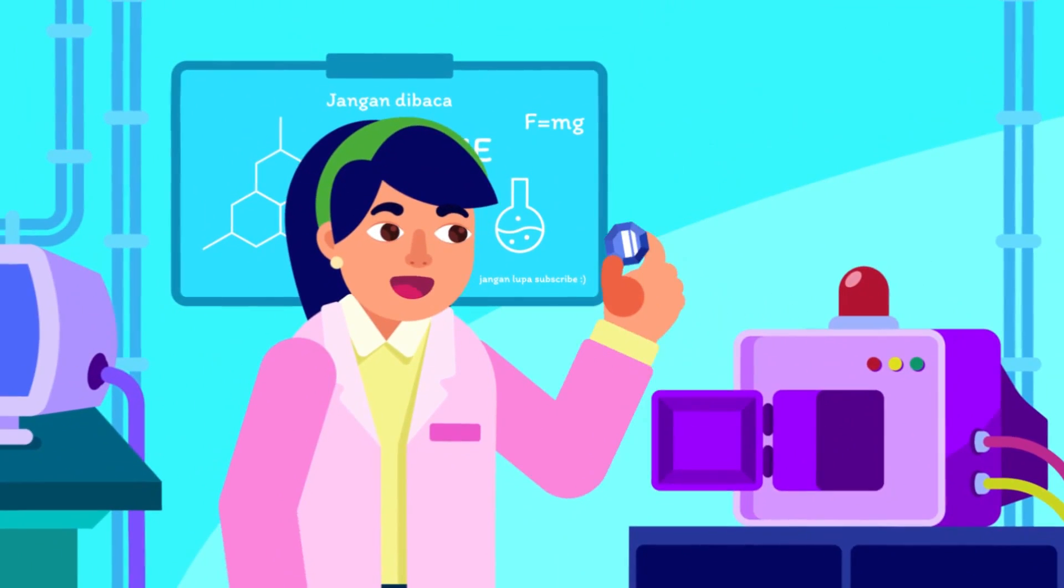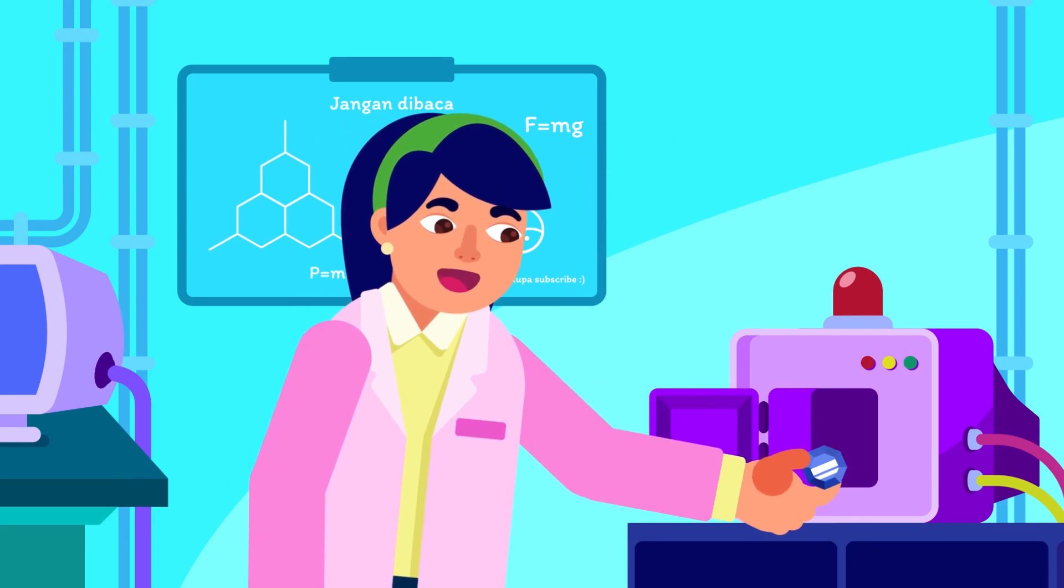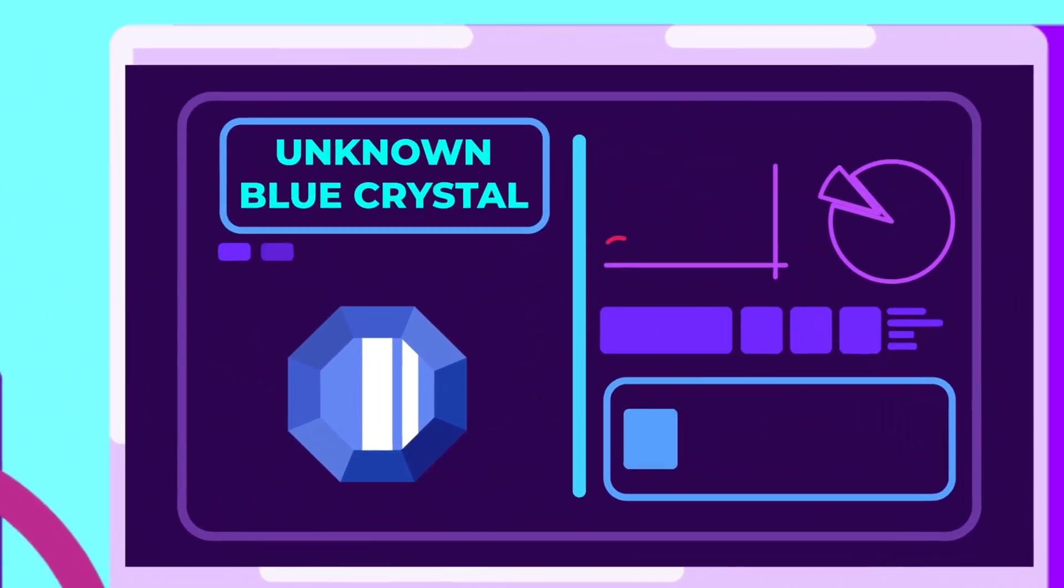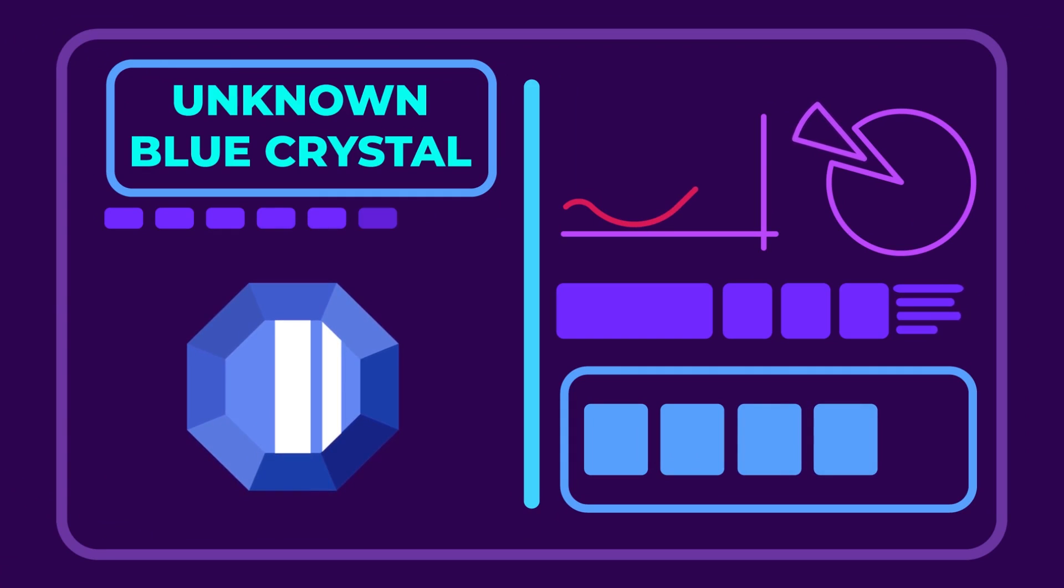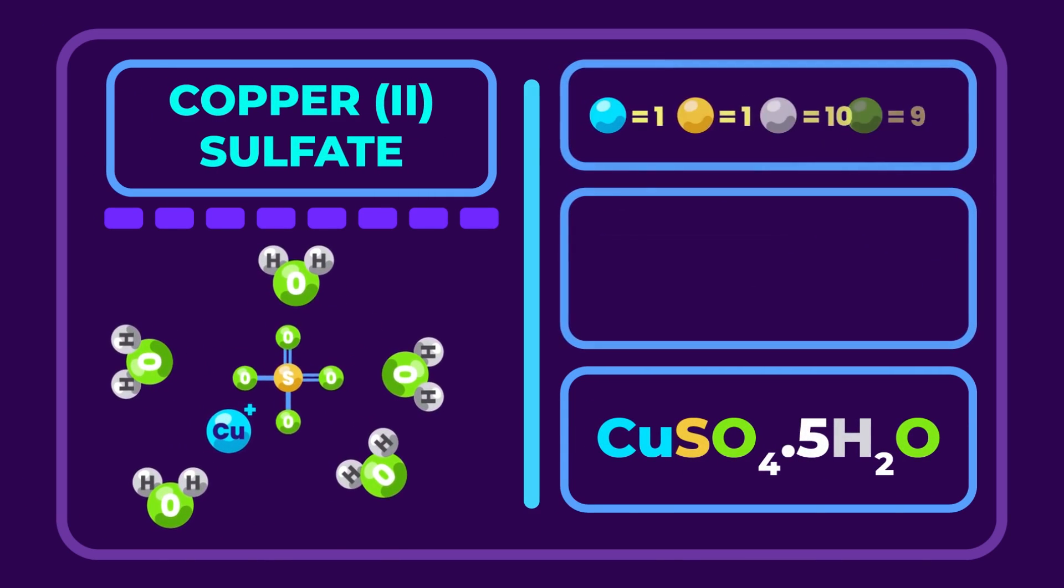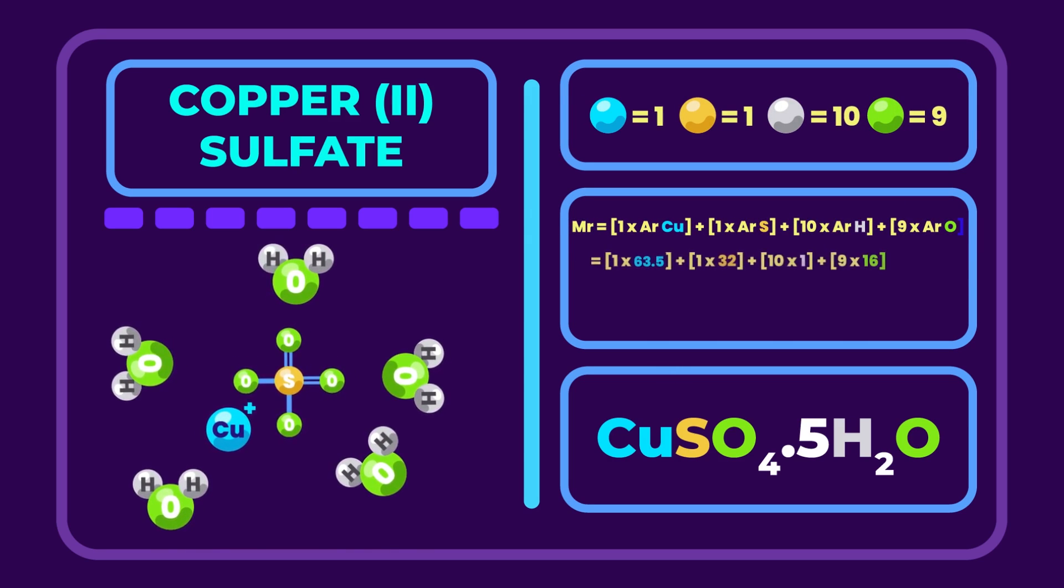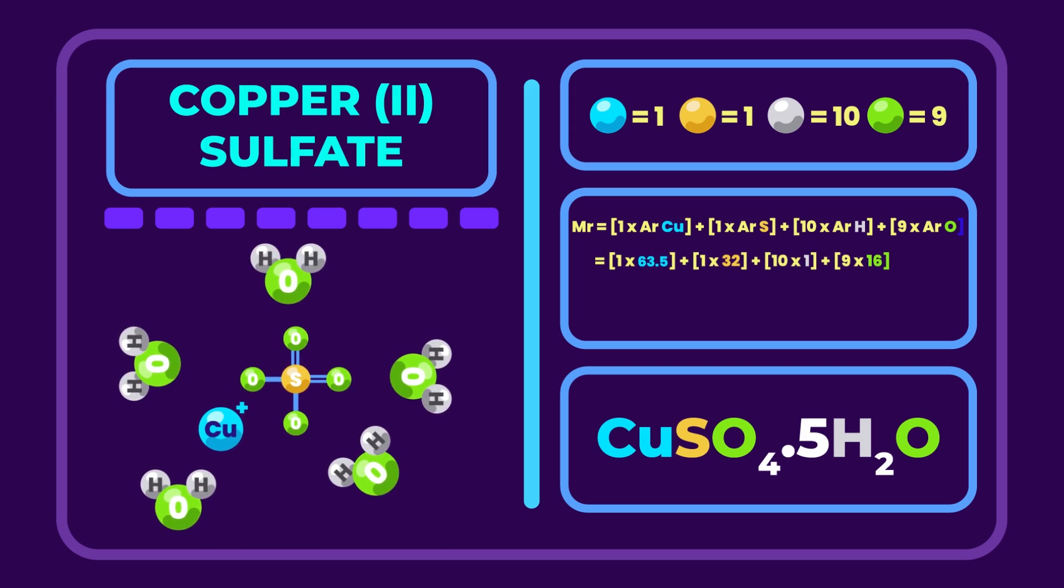Even for tricky substances such as the wonderful blue copper sulfate crystals, the steps remain similar. First, obtain the chemical formula from our giant lattice structure, which is CuSO4·5H2O, and then figure out the number of atoms in each element. Multiplying them with its respective AR and adding them all together give us the relative formula mass of copper sulfate crystals.